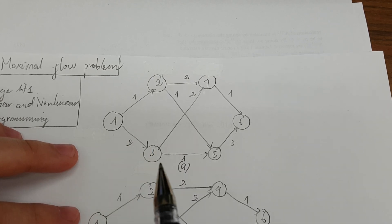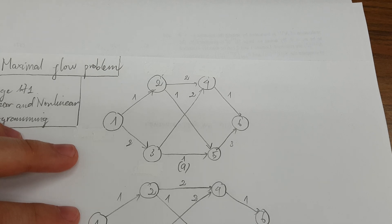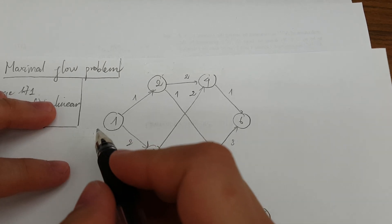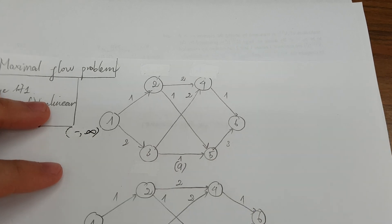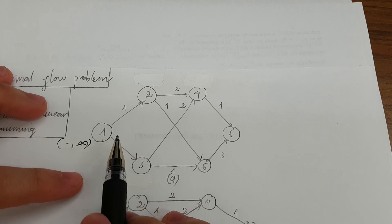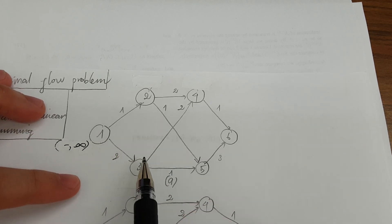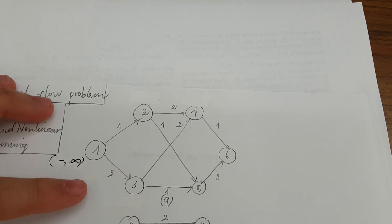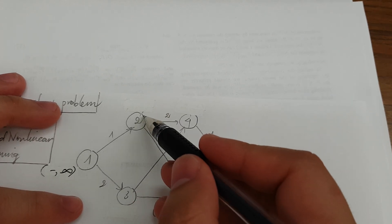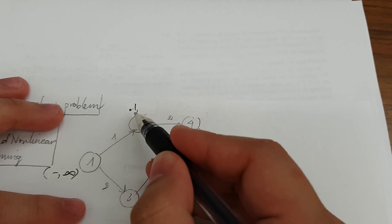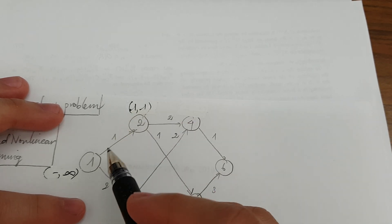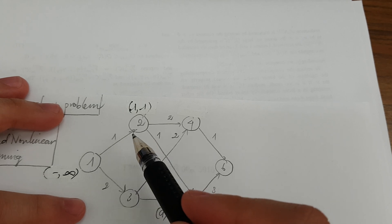To solve this problem we follow the constructions in the book. From the source we label it as (none, infinity). From the source we scan and there are two nodes: node 2 and node 3. We label node 2 as (1, 1) — the previous node is 1, and the capacity we can push from node 1 to node 2 is 1.